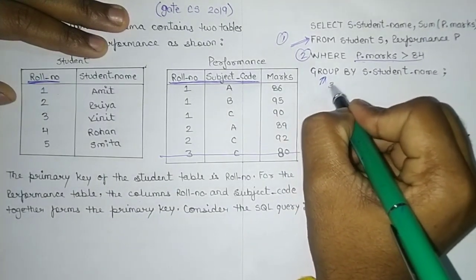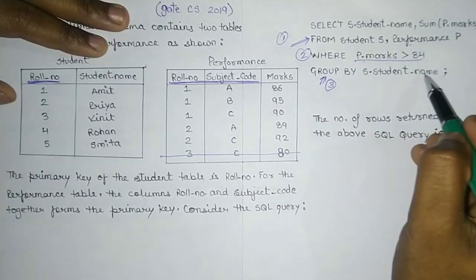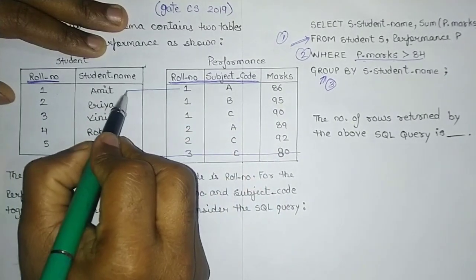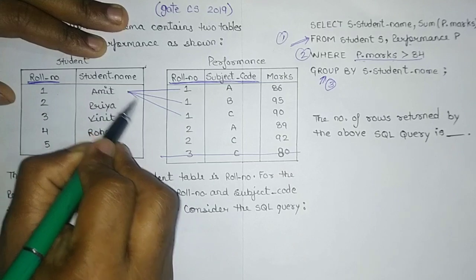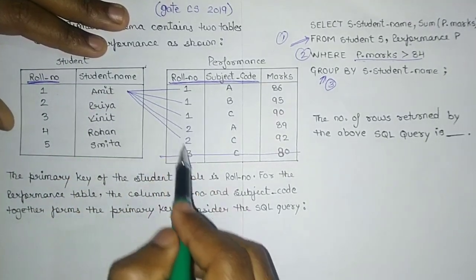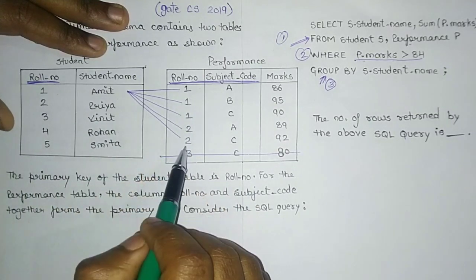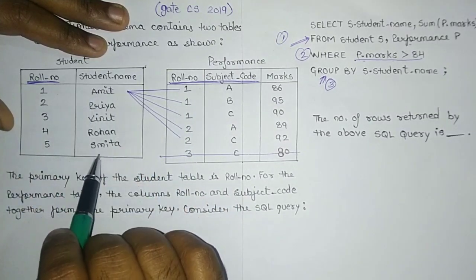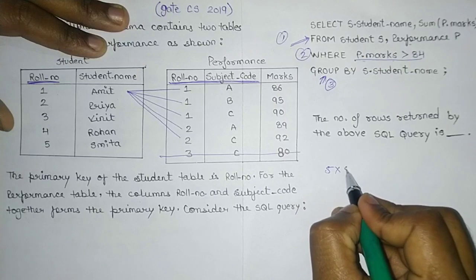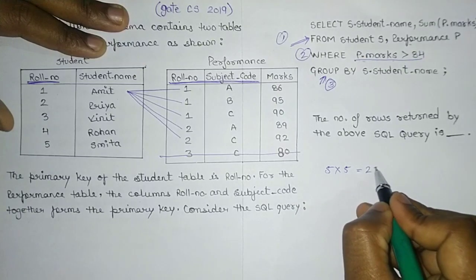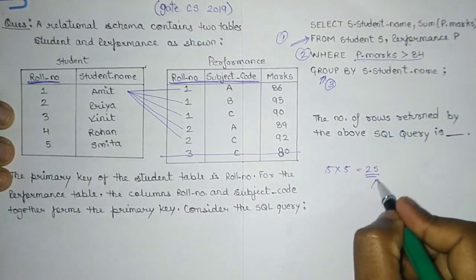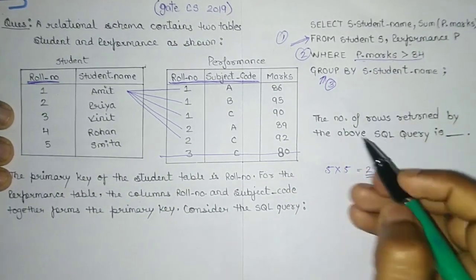Next, we proceed to the GROUP BY clause — the third step in execution order — grouping by student name. Performing the cross product, Amit is mapped with all five remaining performance records. Similarly, Priya is mapped with all five values, and Vinith is also mapped with five values. So the cross product gives 5 × 5 = 25 records. After the cross product, we have 25 records, and we group them by student name.